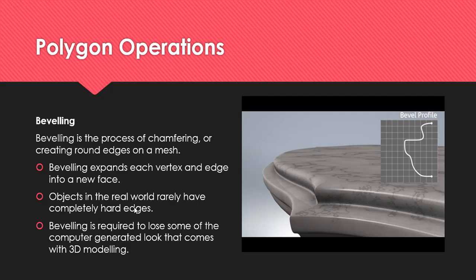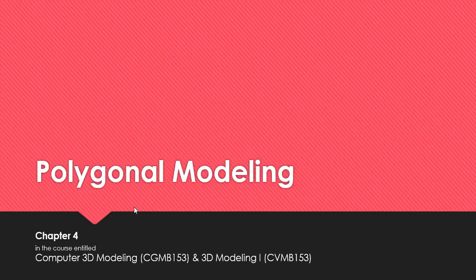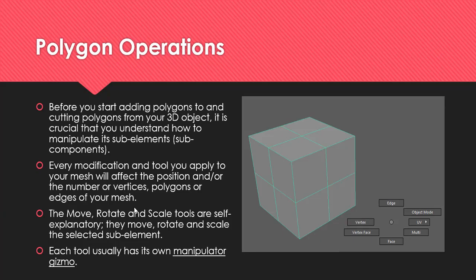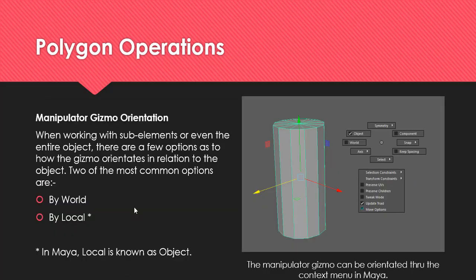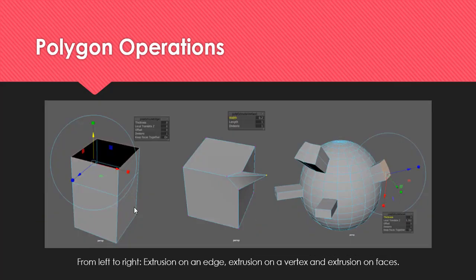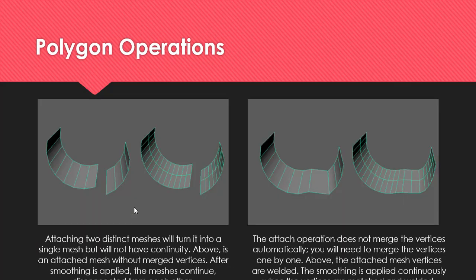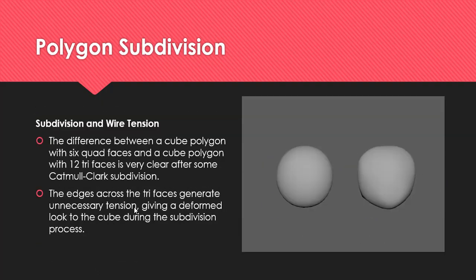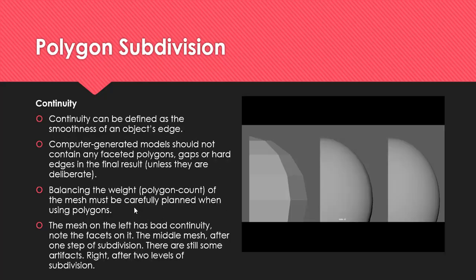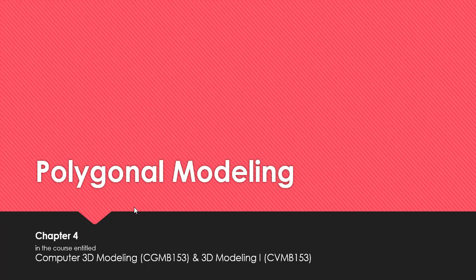The last part is Section C — the modeling methods question. That's why this chapter is very important. It has all the operations you've been using in the lab: cutting polygons, beveling, detaching, attaching. Section C is basically me giving you a picture and asking you to come up with the best way to model that thing. All of this is polygonal modeling.